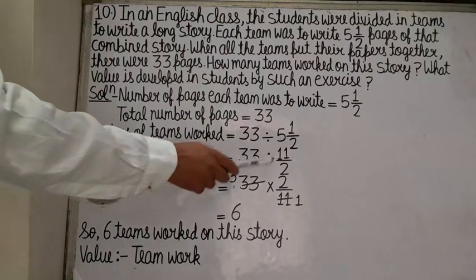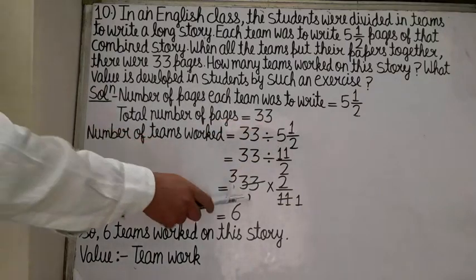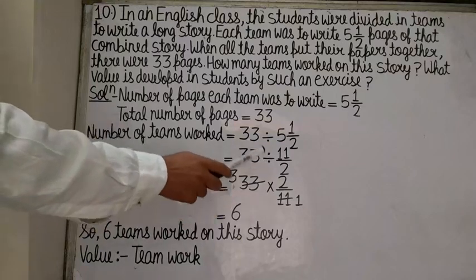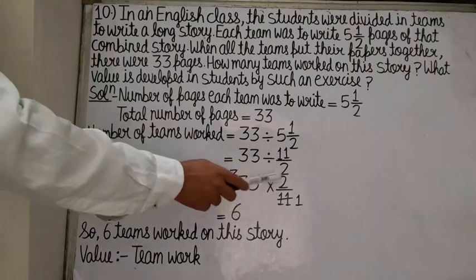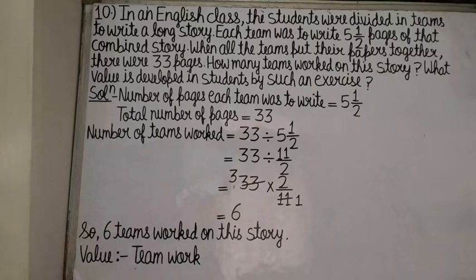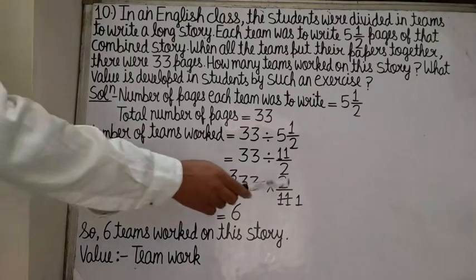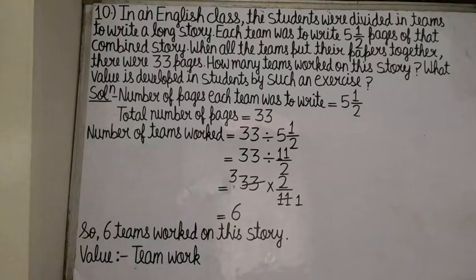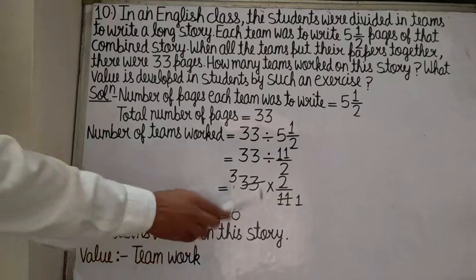We write 33 divided by 5 and 1/2. Converting 5 and 1/2: 2 times 5 is 10 plus 1 is 11, so 11/2. We replace the division sign with multiplication and take the reciprocal: 33 times 2/11. We reduce 11 into 33 to get 3, giving 3 times 2 equals 6. So the answer is 6 — total 6 teams worked on this story.